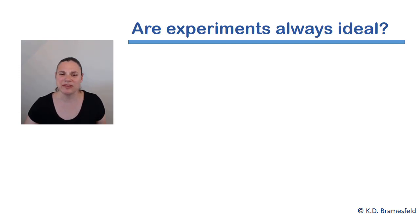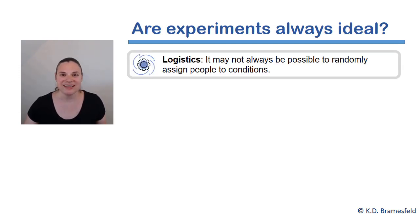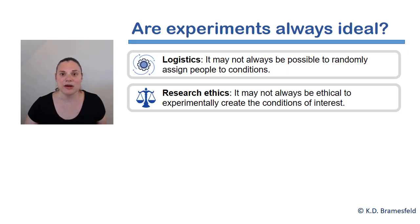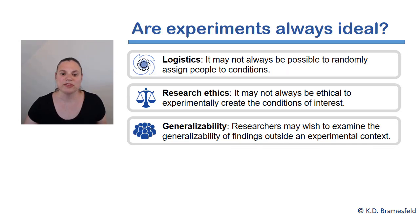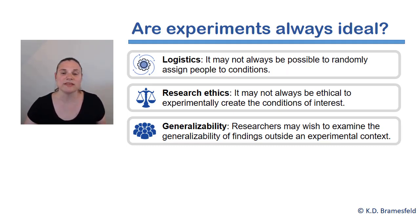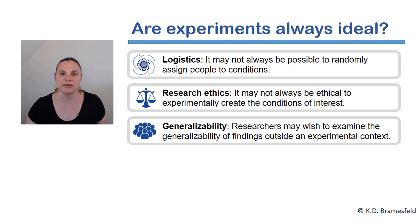But are experiments always ideal? Sometimes it may just not be logistically possible to randomly assign people to conditions. Likewise, it may not always be ethical to do so. In addition, researchers may wish to examine the generalizability of findings outside of experimental contexts. As such, even though experiments are the gold standard for establishing internal validity, there may be situations under which a researcher may wish to evaluate an internal validity question but may not be able to use an experiment to do so.